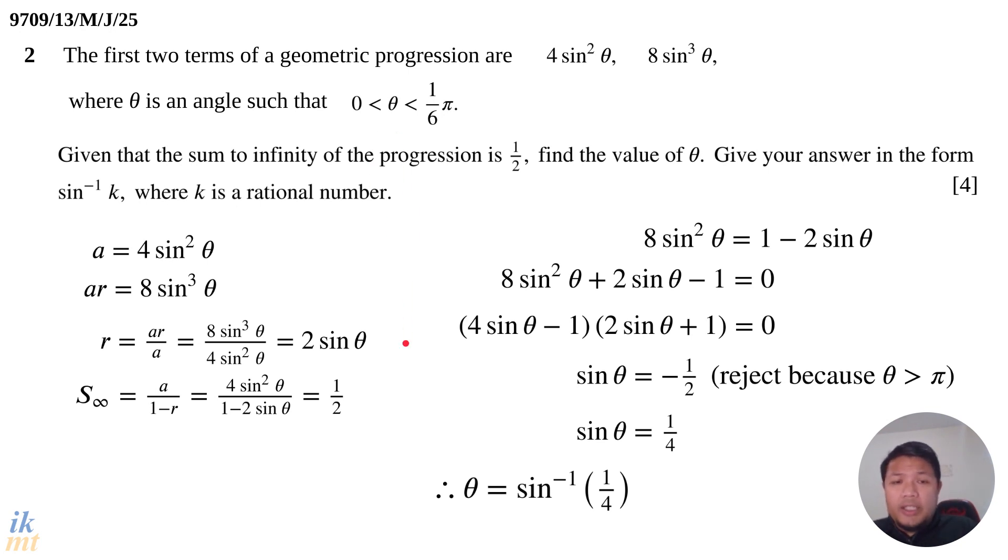If you do this carefully and keep all the restrictions in mind, you will only get one solution in the form that the question wants. If you get θ = sin⁻¹(1/4), then you have done a good job.